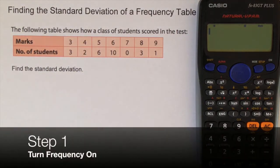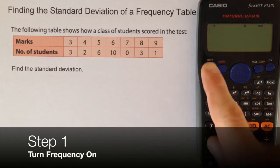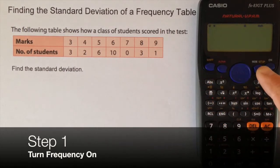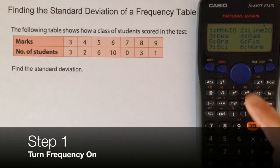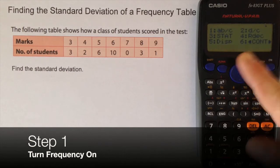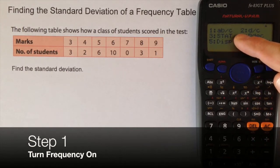To find the standard deviation, first I must ensure that the frequency is turned on in the calculator. This is a setup issue, so I press Shift and Setup. Pressing the down arrow key, I have an option three, which is to do with statistics.